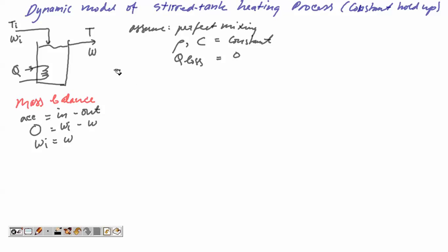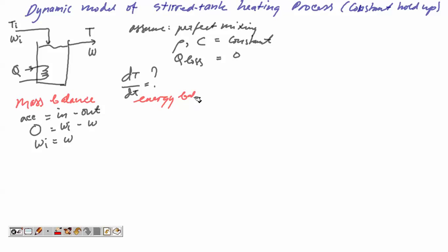We want to find dT/dt. Because there is energy input from the heater, we apply the energy balance in our calculation. The energy balance can be written as: accumulation equals input minus output.